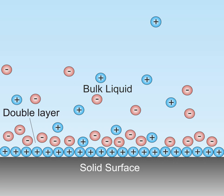The DL refers to two parallel layers of charge surrounding the object. The first layer, the surface charge, either positive or negative,